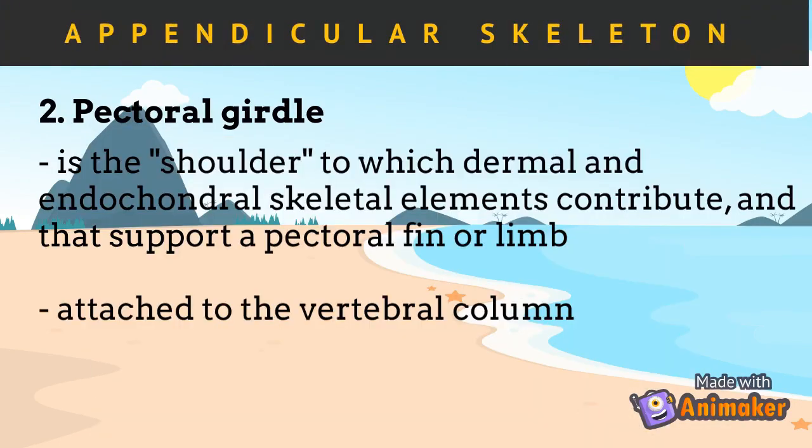The pectoral girdle is the shoulder structure to which dermal and endochondral skeletal elements contribute, and that supports a pectoral fin or limb. It is usually attached to the vertebral column.